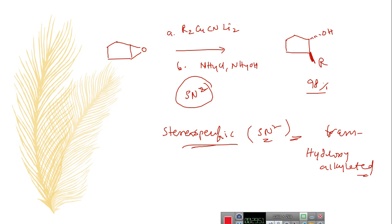This is another application of Gilman's reagents. All these cases — alkyl halides, epoxides, nucleophilic displacement of tosylates, and acid halides — come under the substitution reactions of Gilman's reagent. In the next video, we will continue the other application of Gilman's reagent, that is conjugate addition, which is a very important reaction for the formation of C-C bonds in organic synthesis. We will discuss the stereochemistry involved in conjugate addition of Gilman's reagent with different substrates. Thank you.